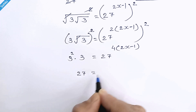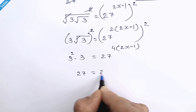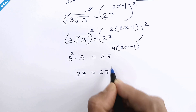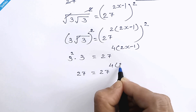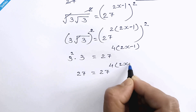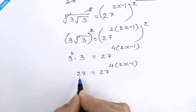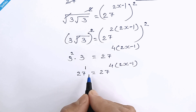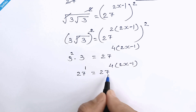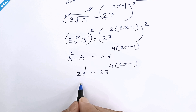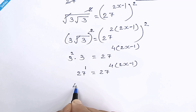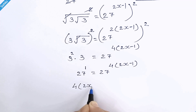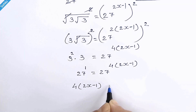So we can write 27 is equal to 27 raised to 4 times (2x minus 1). The 1 on the left is the default exponent. Now we have the same base on both sides, so we can equate their exponents.